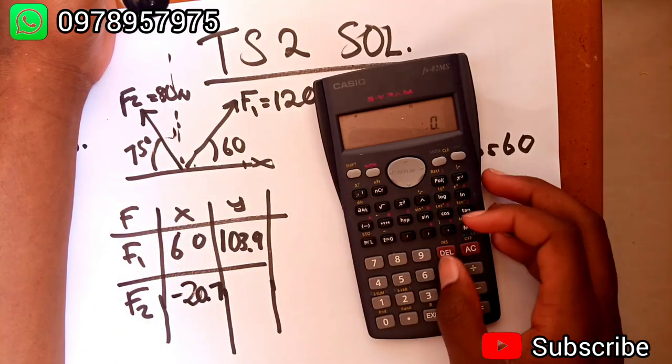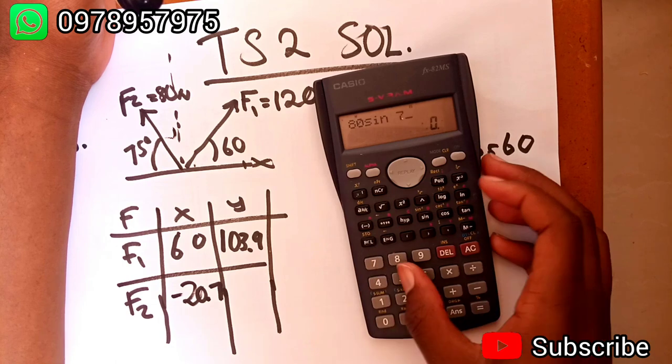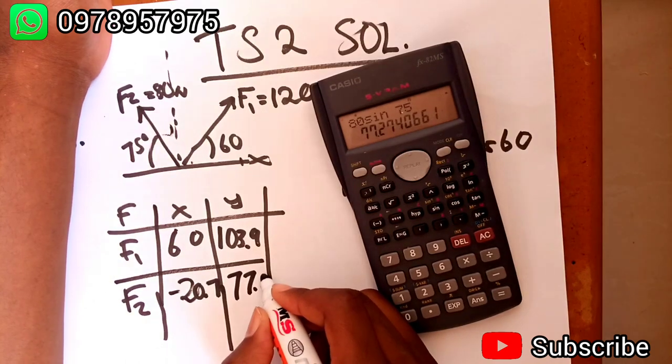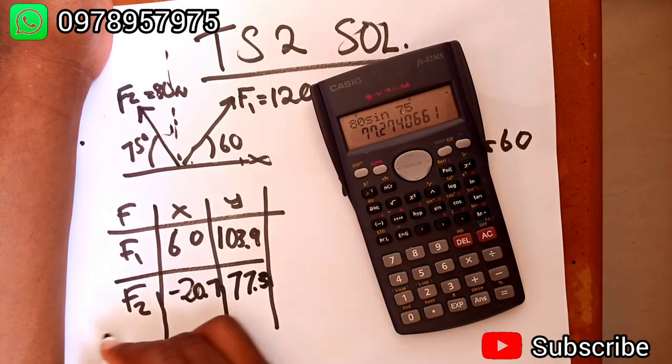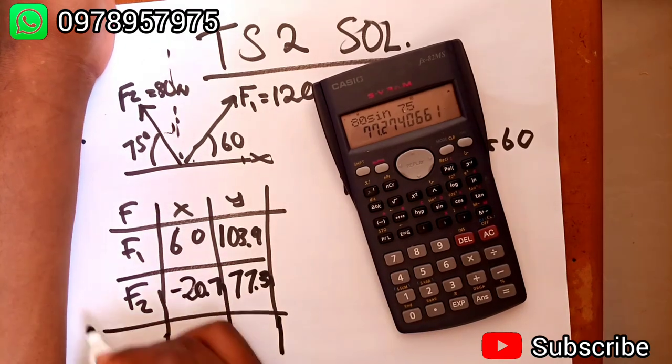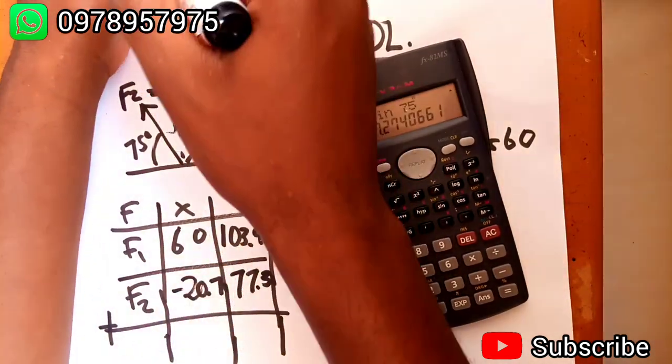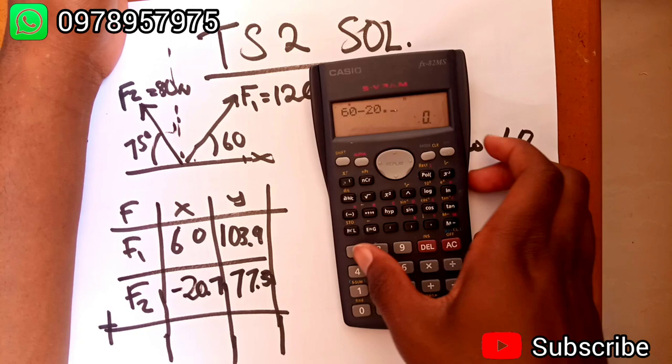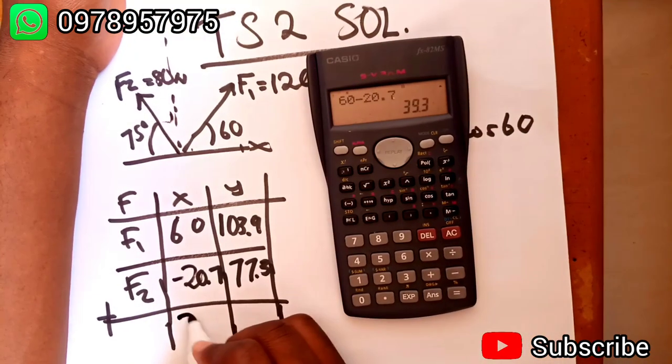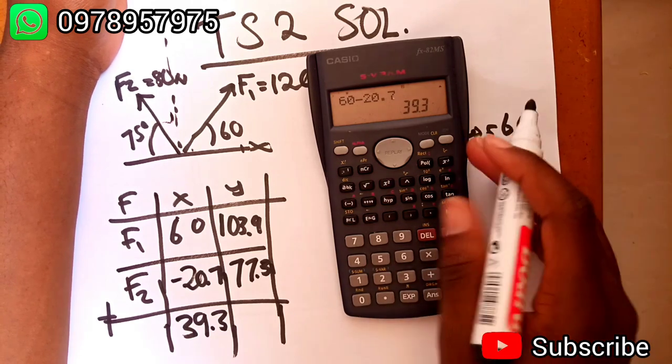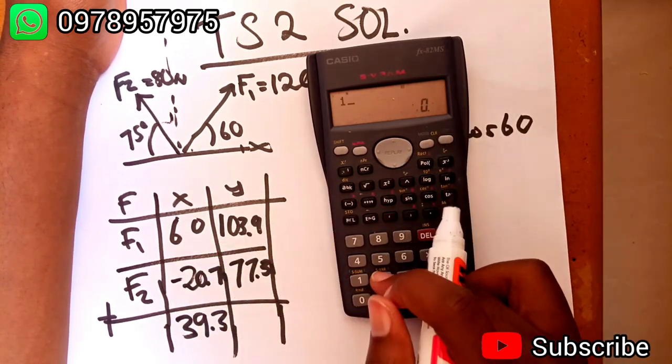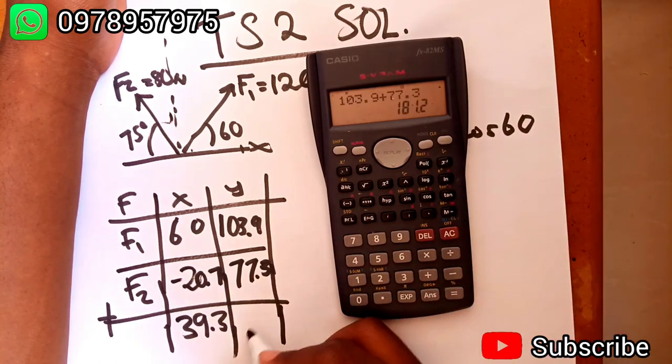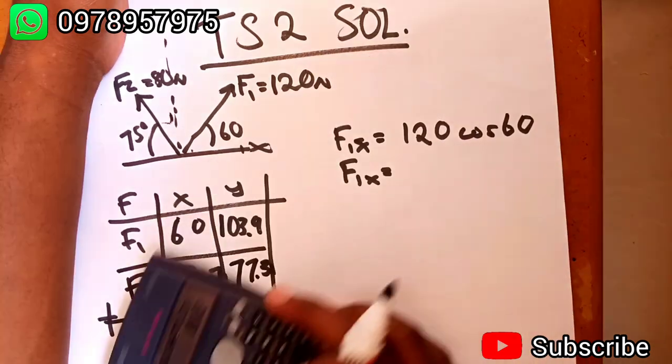Then F2 in the y direction, it's positive. It's going to be 80 sine 75, that's going to be 77.3. Now I'm going to add this. This one plus this one, 60 plus negative 20.7, gives 39.3.